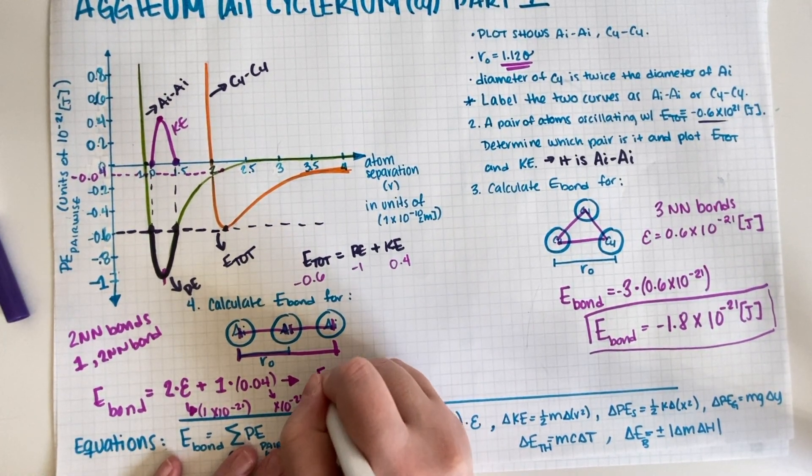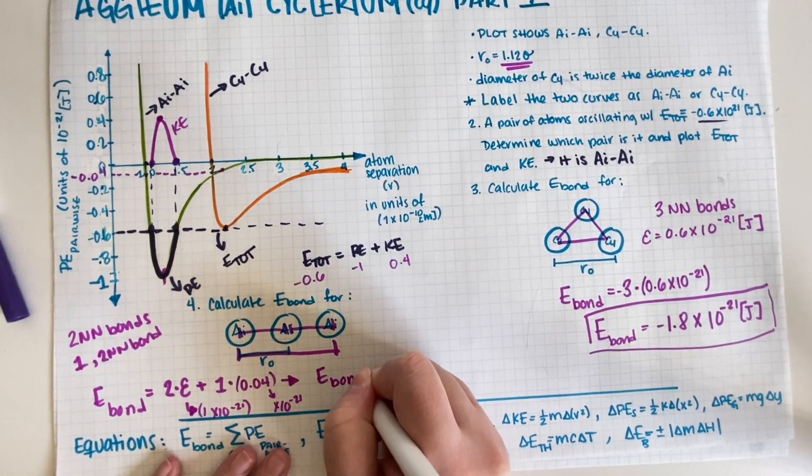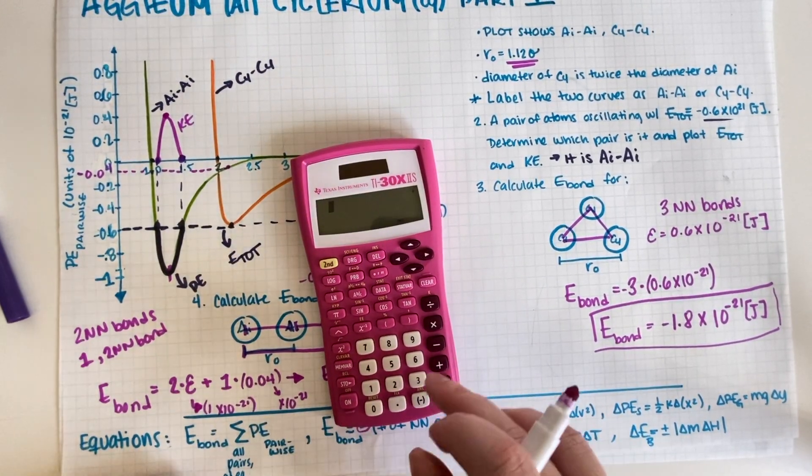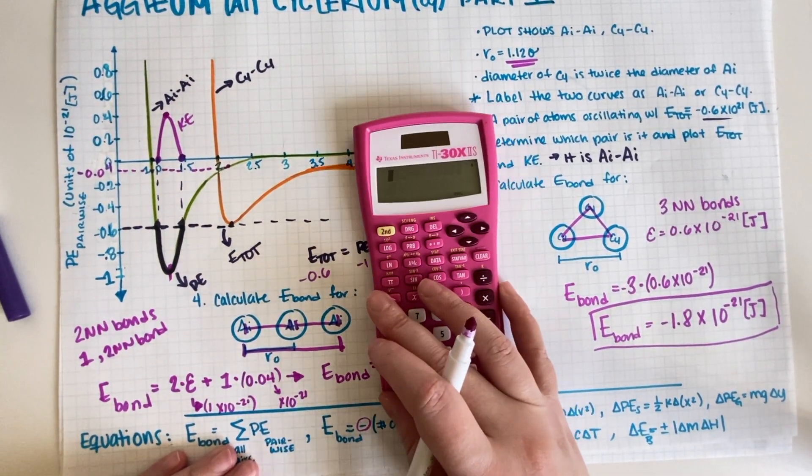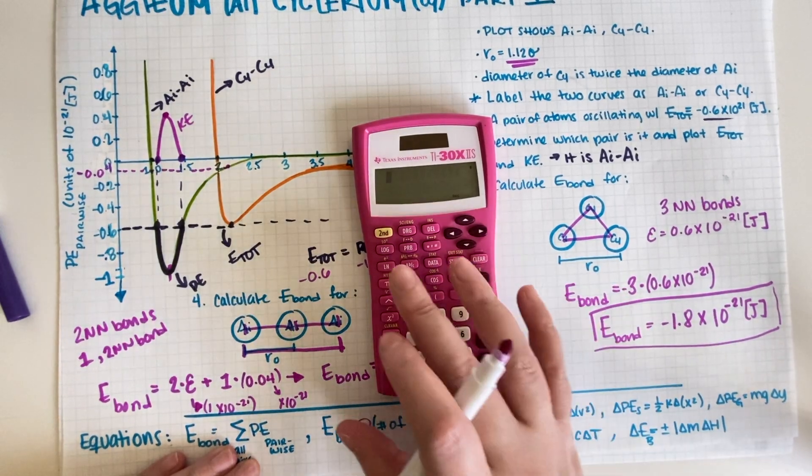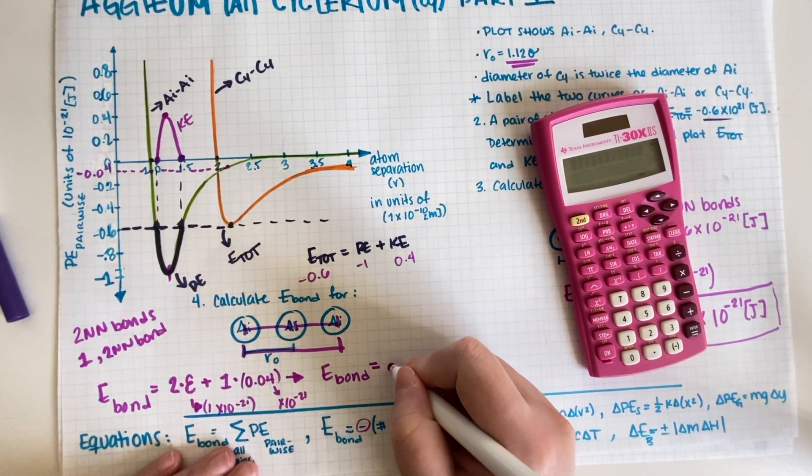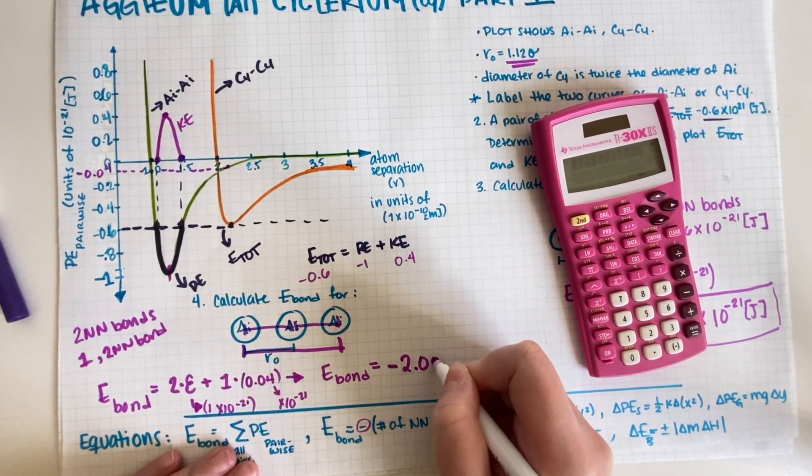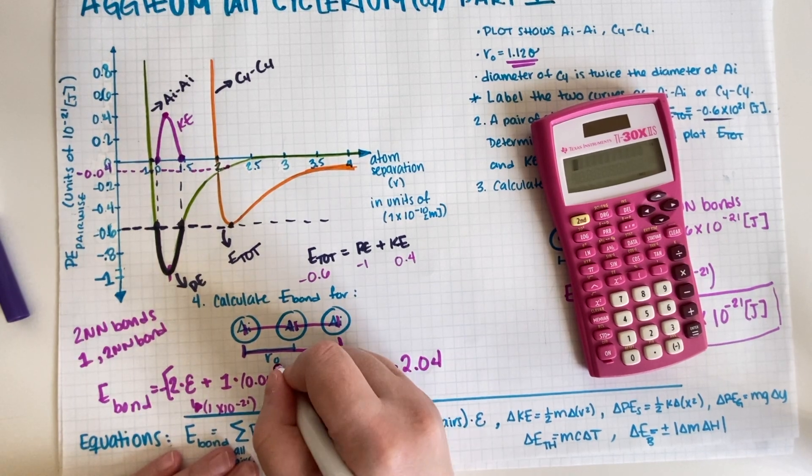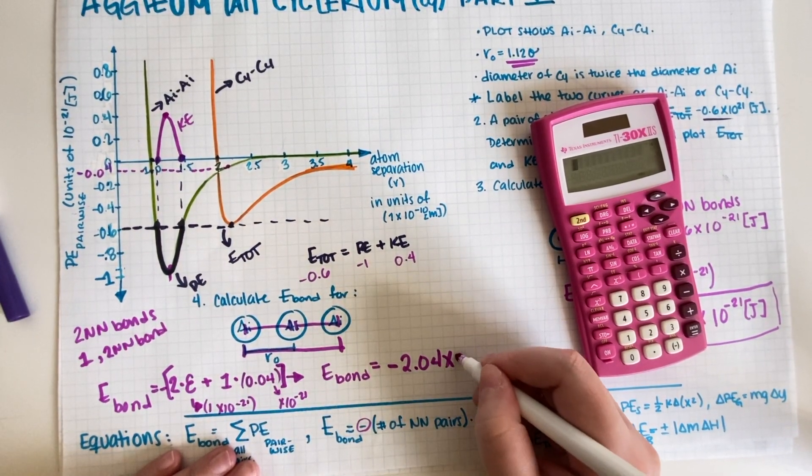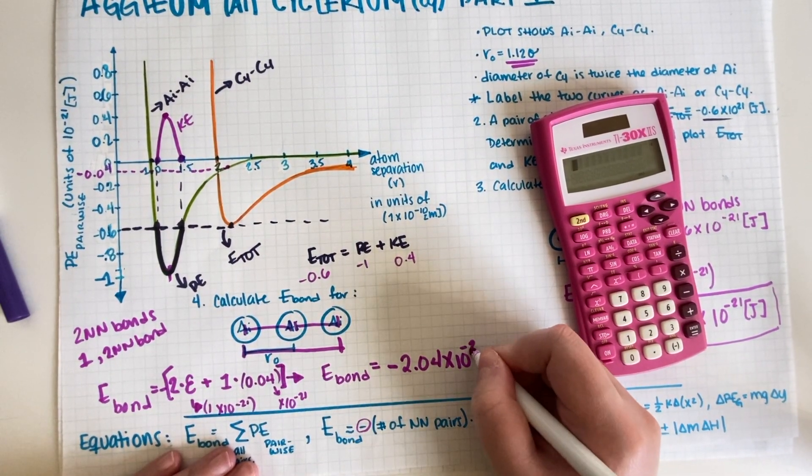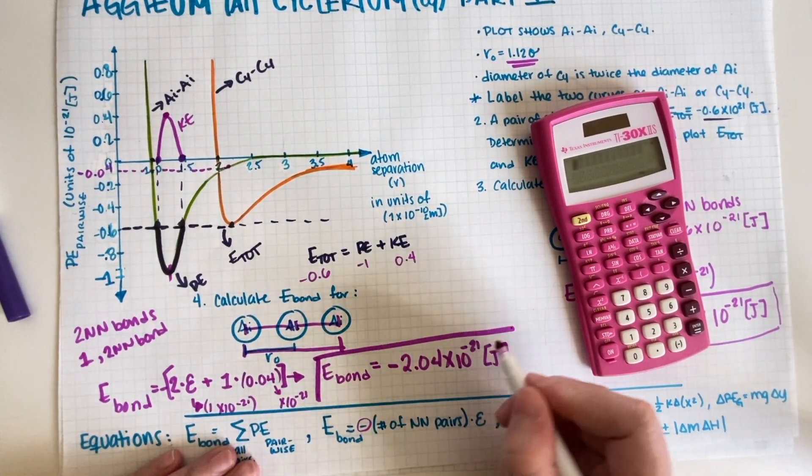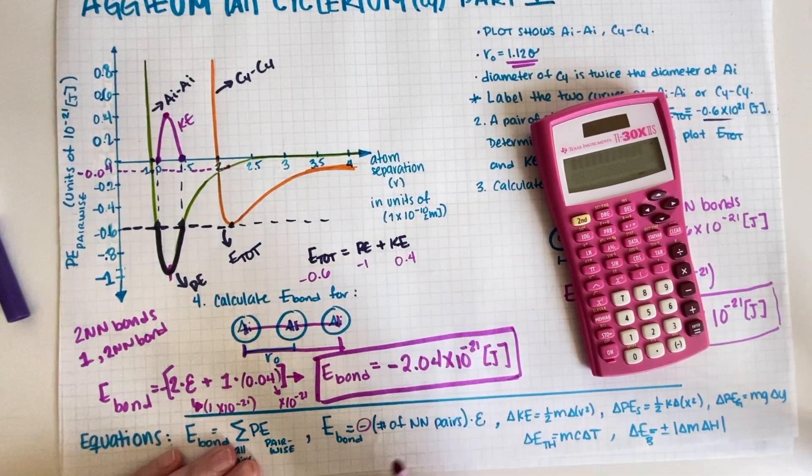So if I put this on a calculator... let's see. Oh, I don't need to - this is just 2 plus 0.04, so this is -2.04 × 10⁻²¹ joules. Final answer.